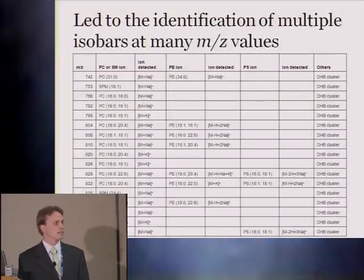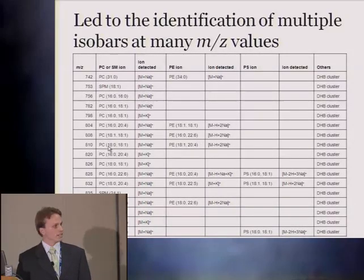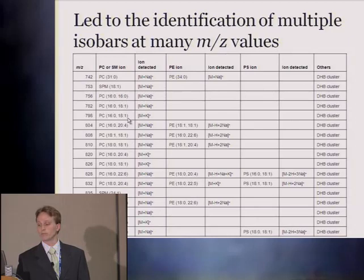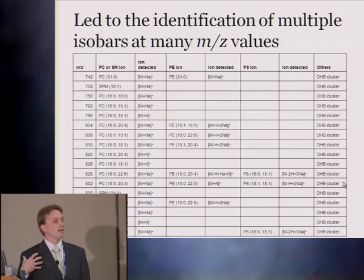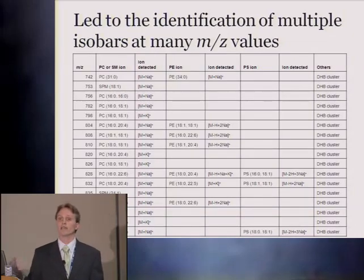When you do that across all samples, you get a table showing the different ions detectable from one single mass as well as the different lipid species. One downfall of MALDI is that you have a DHB matrix ion at every single mass — they're really low abundant, but that's what happens with a matrix molecule.